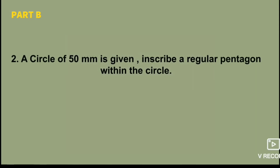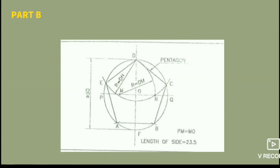If you want to use a circle of 50mm, you can inscribe a regular pentagon within this circle. You can use a general method. If you want to use a circle, you can use a proper method and a circle of 23.5mm.